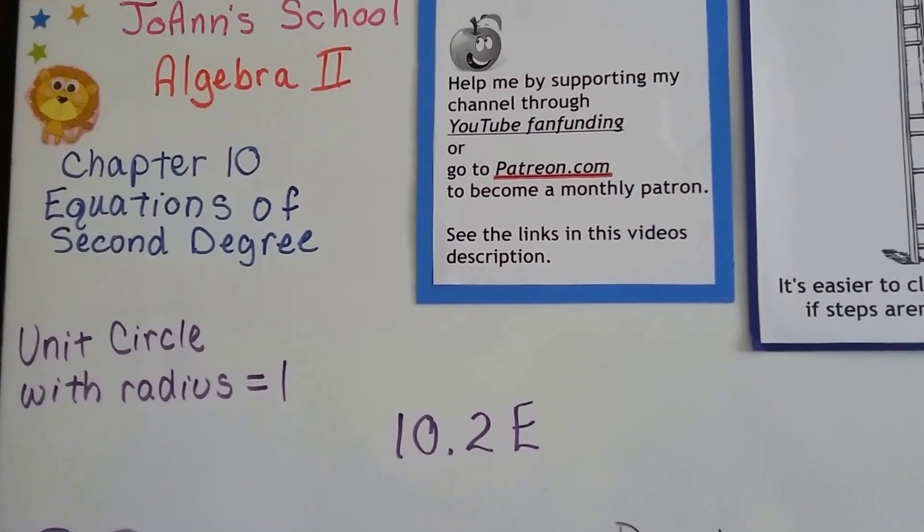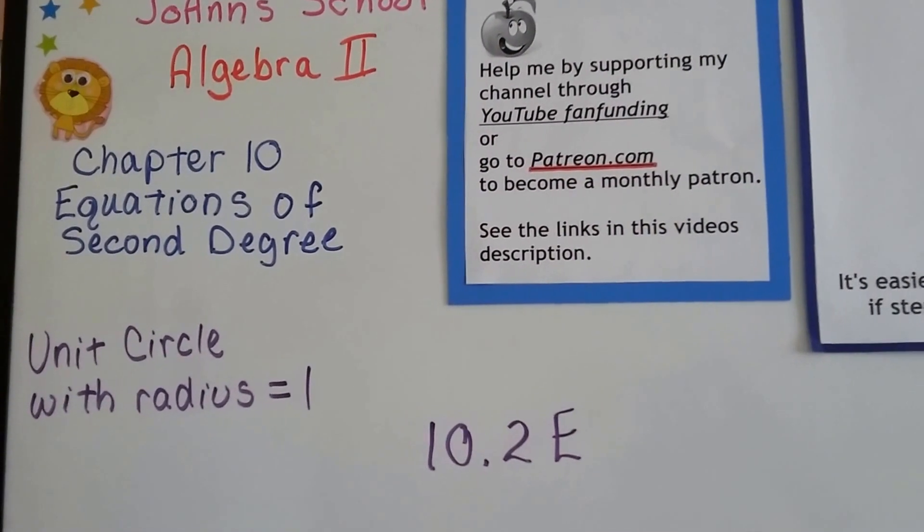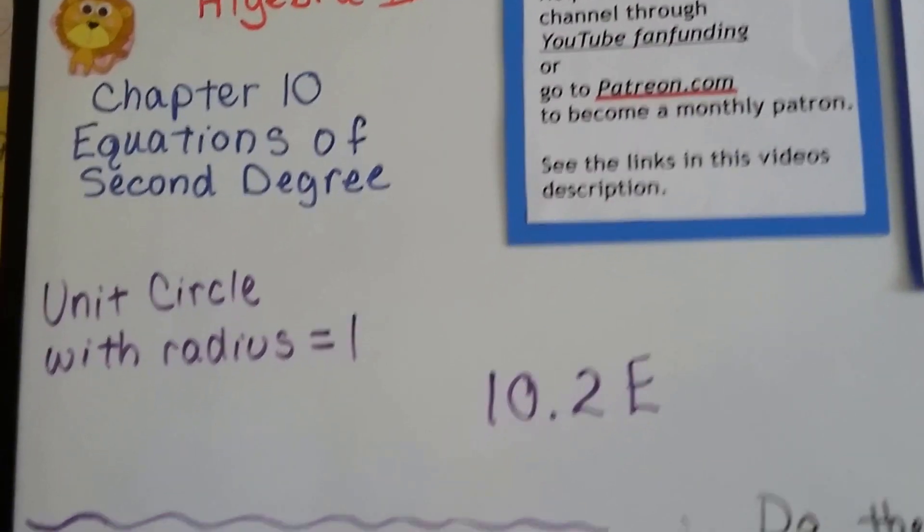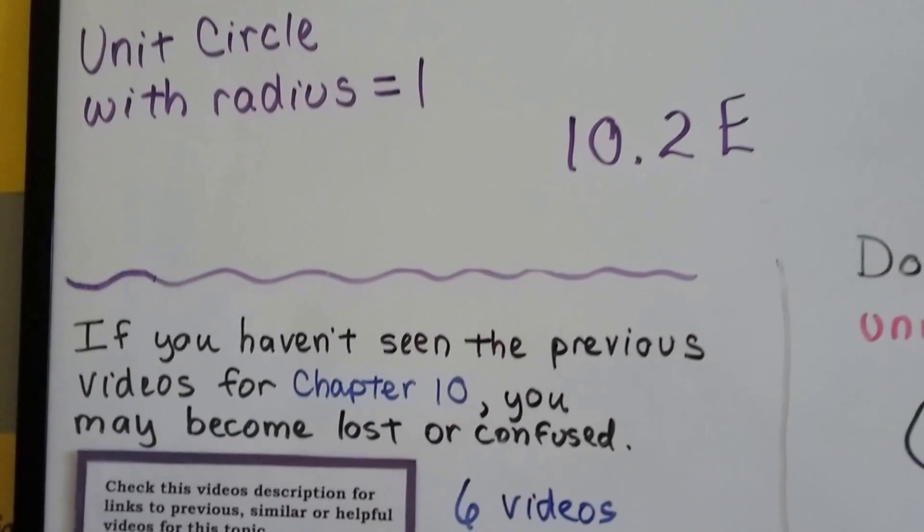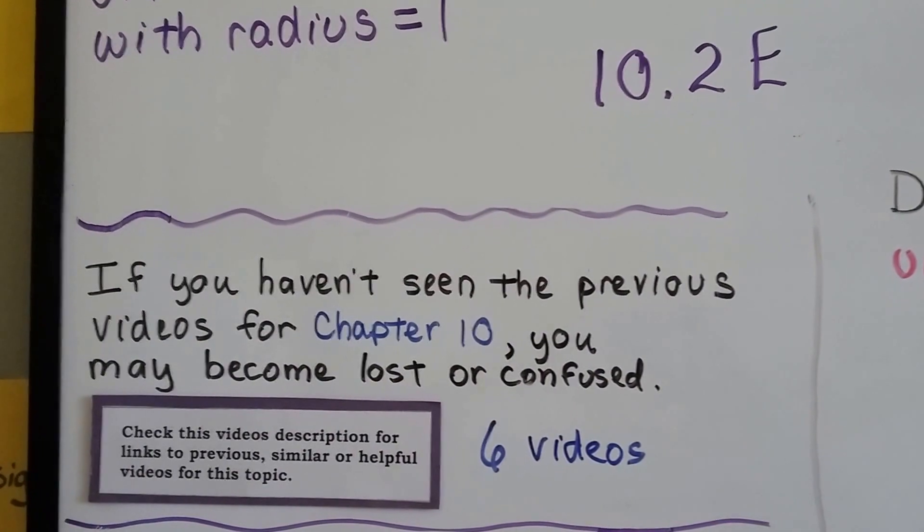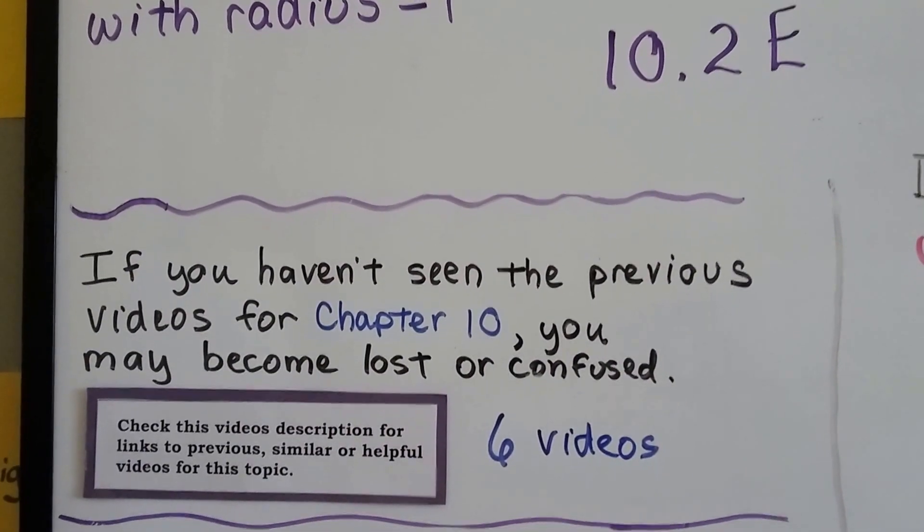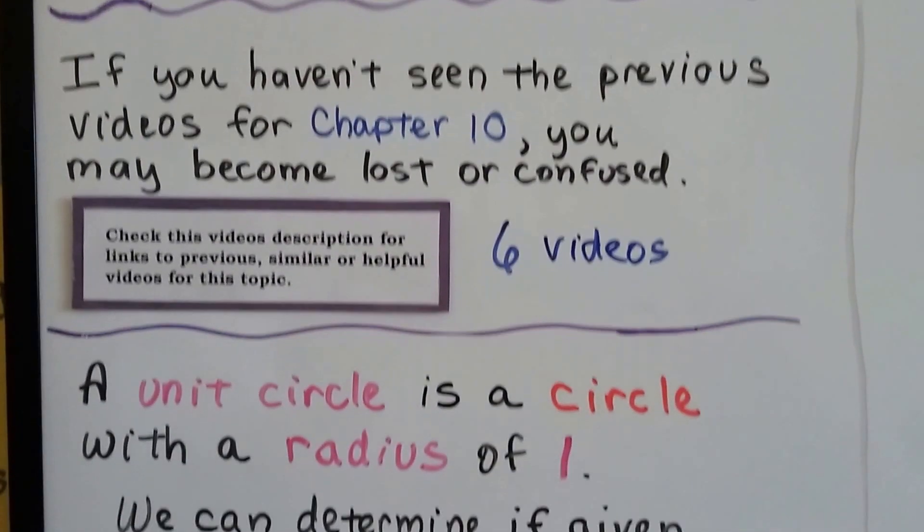We're in Algebra 2 at 10.2e, and we're going to talk about a unit circle with a radius that equals 1. We had 6 previous videos for Chapter 10 now, and if you've become lost or confused, you can just click on the description and watch the previous videos to catch up.